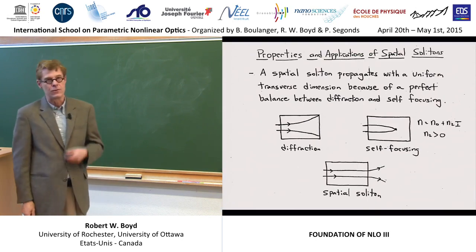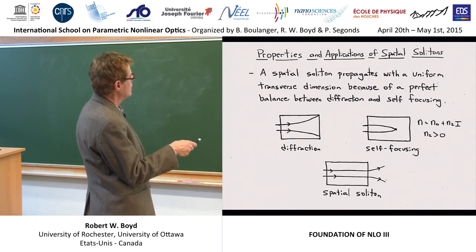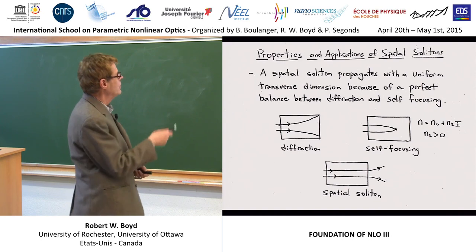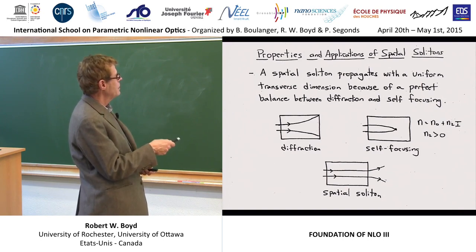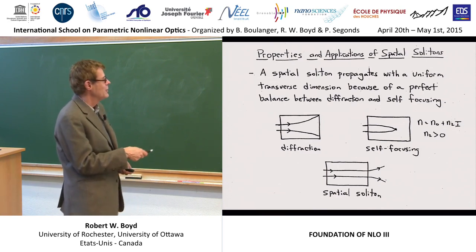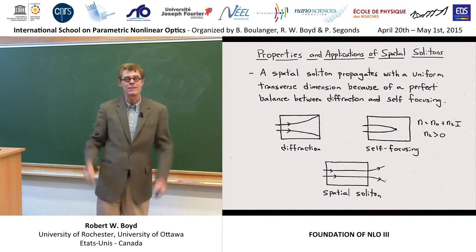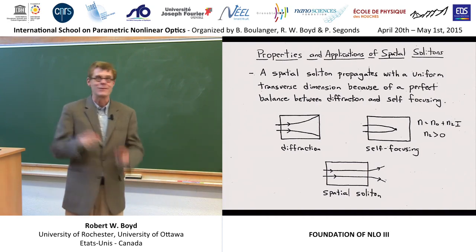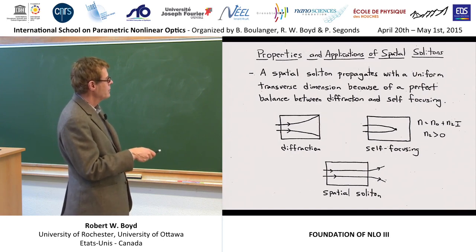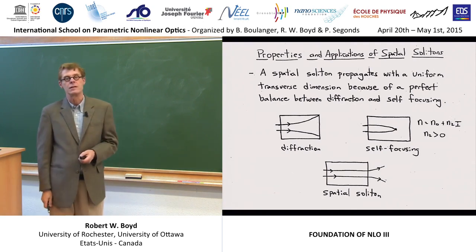The word spatial soliton is equivalently used to mean a self-trapped filament of light — just two different ways of expressing the same thought. A soliton propagates with a uniform transverse dimension because of a perfect balance between diffraction and self-focusing. I like simple pictures. A beam of light on its own will tend to diffract. But if N2 is positive, it will tend to self-focus. If you have an exact perfect balance between these two effects, the beam will propagate with neither spreading nor focusing. This is how we understand the existence of a spatial soliton.